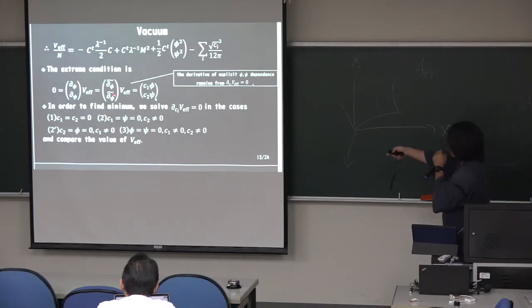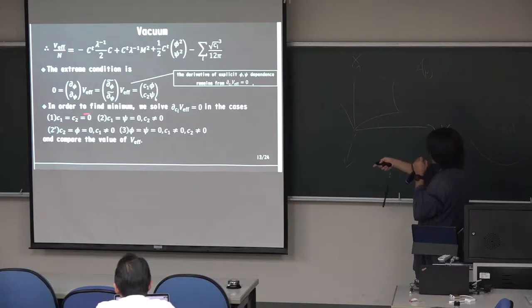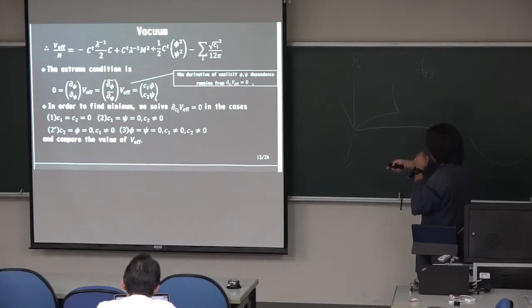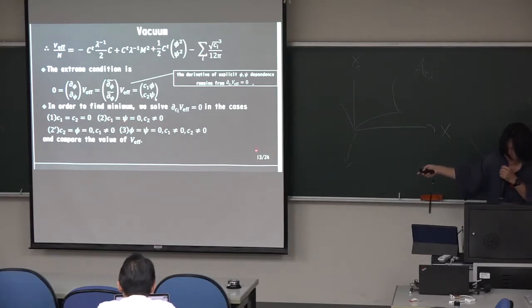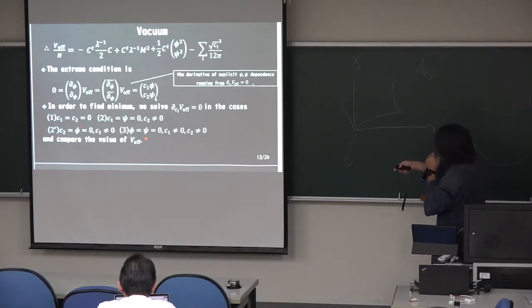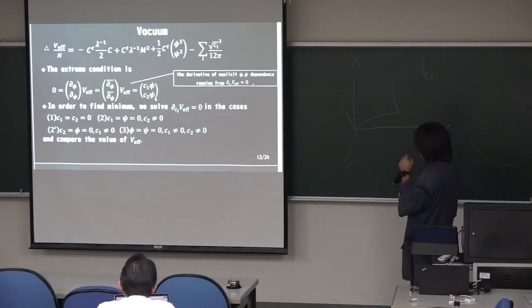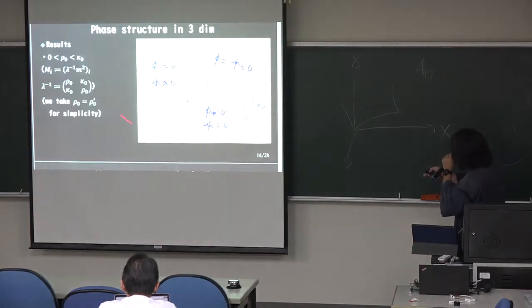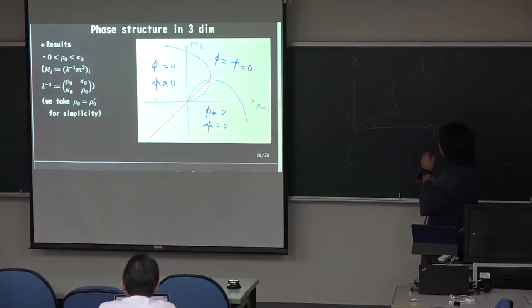So in order to find the minimum, we solve the Cvm in the cases, so both of C are 0, and C1 and Psi are 0, and C2 are 0, or C2 and Phi are 0, and C1 and C2 are 0, and compare the values of V8. Okay, so we get this picture. Ready? Yes.